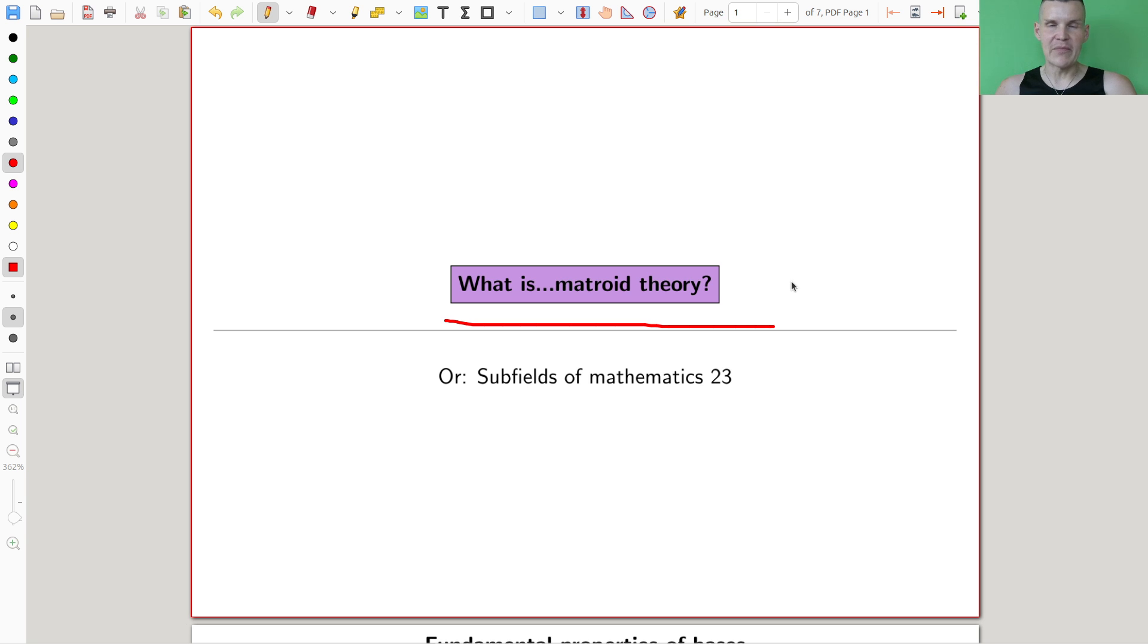So what is matroid theory? It's kind of a nice generalization, as you will see, of both linear algebra and graph theory. And in some sense, it's a generalization of both, and in some sense, it's a generalization of neither. Somehow, it's more kind of taking properties of the field and observing that they are the same in both fields, and then forming a new theory mixing those properties.